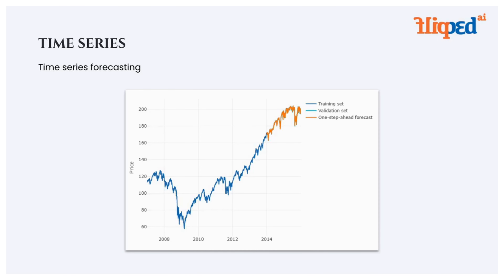And plan for the future. There are several methods used for time series forecasting, including moving averages, exponential smoothing, and autoregressive integrated moving average, which is an ARIMA model. These methods involve analyzing the parameters and trends in the time series data to make predictions about future values.